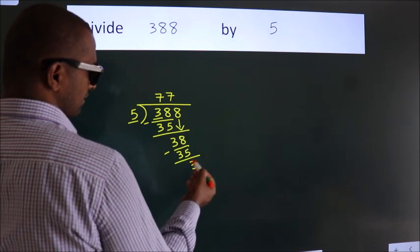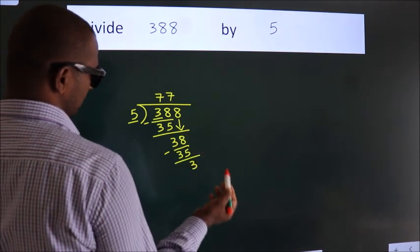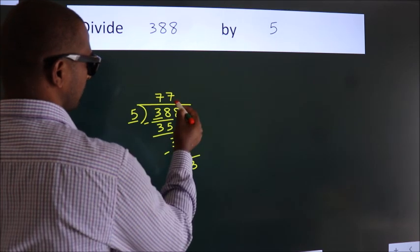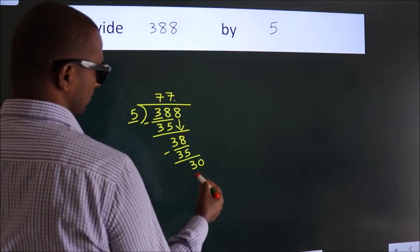After this, no more numbers to bring down. So what we do is, we put a dot and take 0. So 30.